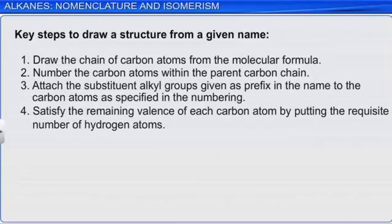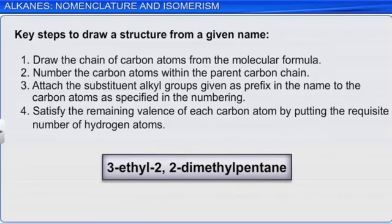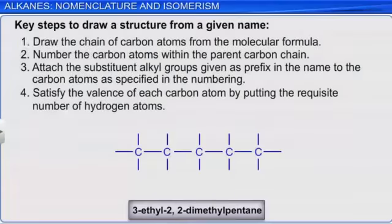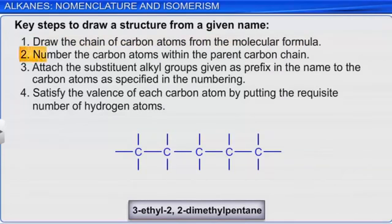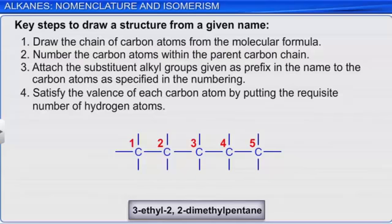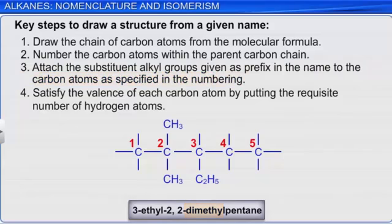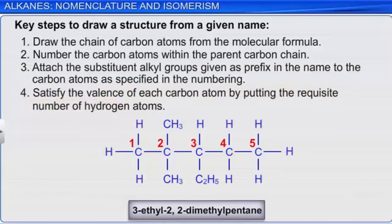Let us now try to draw the structure of 3-ethyl-2,2-dimethylpentane. First, from the base name pentane, we can deduce that the parent carbon chain contains 5 carbon atoms. Second, number these carbon atoms. Third, from the name, we can identify that we have to attach an ethyl group to atom number 3, and two methyl groups to atom number 2. Fourth, fill in the remaining places with hydrogen atoms such that each carbon atom fulfills its valence of 4.